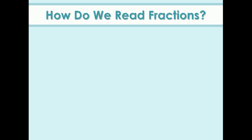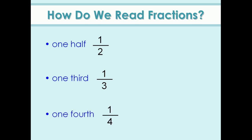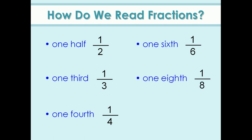How do we read fractions? Look here. This we can read as one half or one by two. This is one third or one by three. This is one fourth — we read it as one fourth or one by four. Here, it is one sixth or one by six. This is one eighth, that is one by eight. Next one: one tenth or one by ten.